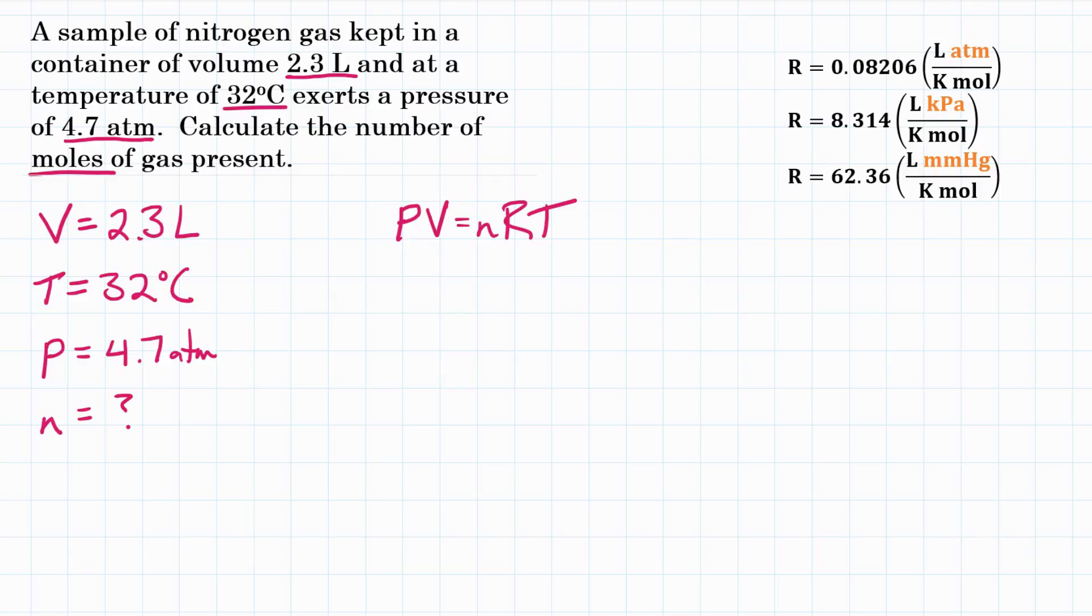We have three of those variables given to us. We're going to solve for one, and R, the only one we don't have, that is a constant. It's the universal gas constant.